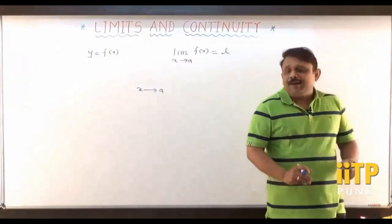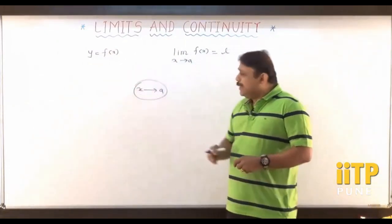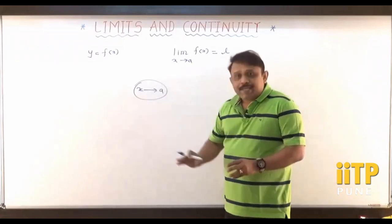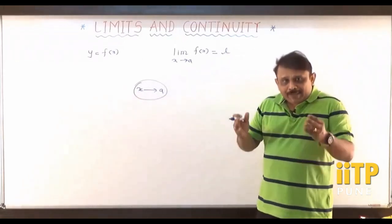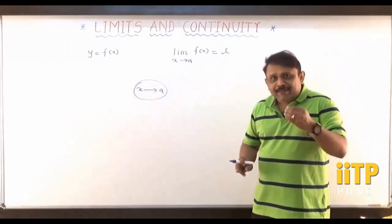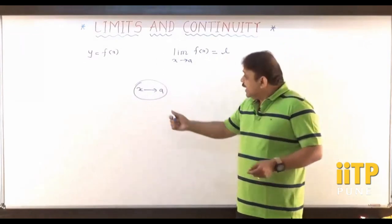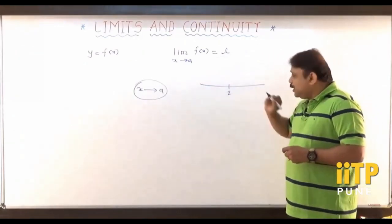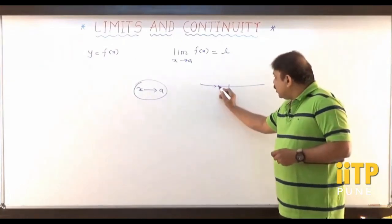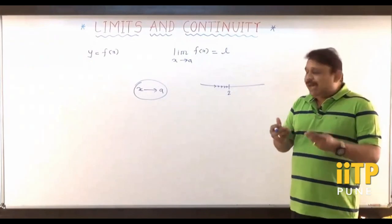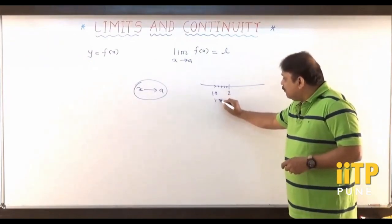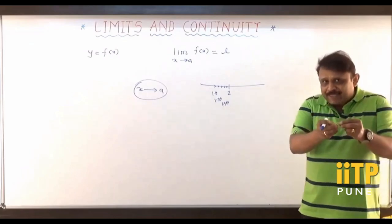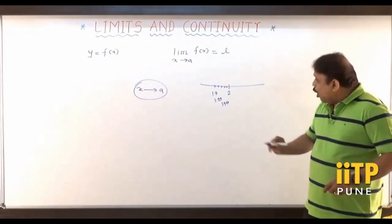Now let us first understand the meaning of x tends to a. Here a is a constant and x is a variable, so x takes different values. But this variable x is taking values which are very close to a without taking the value a itself — then we say that x tends to a. For example, on the real line, suppose I consider the number 2 and x is coming from the left towards 2. Its values could be 1.9, then 1.99, then 1.999, and so on.